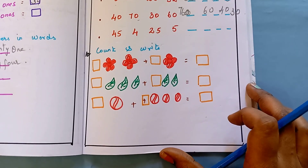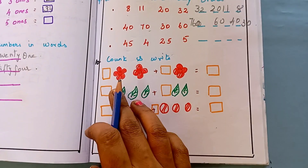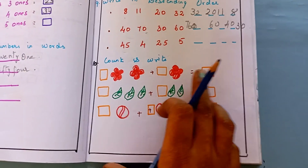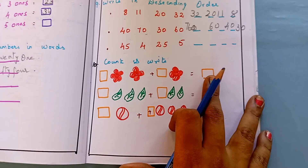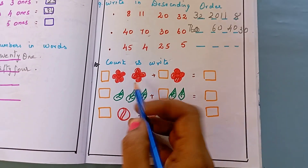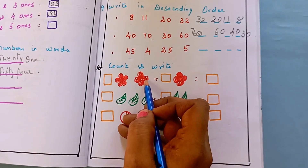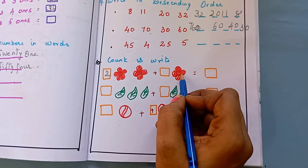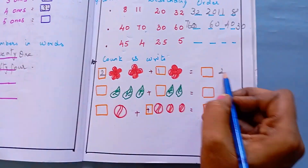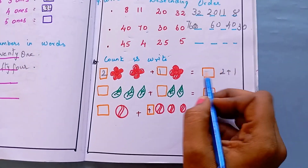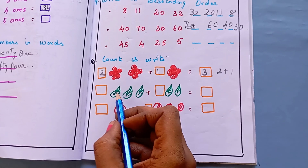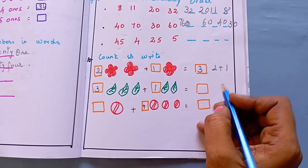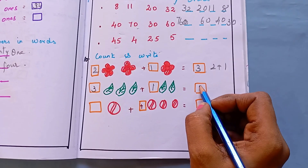The 10th question is: count and write. Here I have given some pictures — they have to count the pictures and write the answer. So first there are 2 flowers, that is 2. Then here it is 1. So 2 plus 1 is 3. Like this, they have to count the pictures and find the answer.